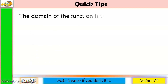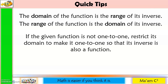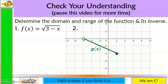Some quick tips: if the given function is not one-to-one, restrict its domain to make it one-to-one so that its inverse is also a function. The graphs of a function and its inverse are symmetrical about the line y = x. Now let's check your understanding — pause the video for more time.